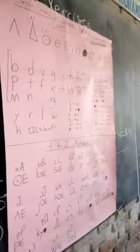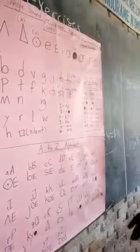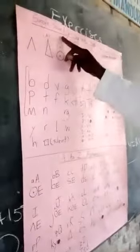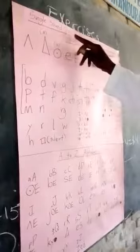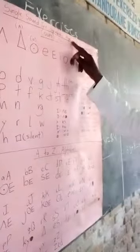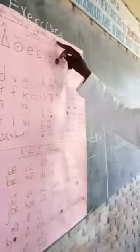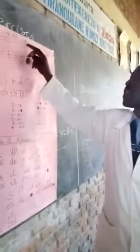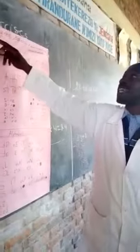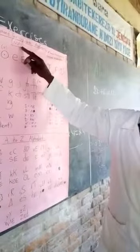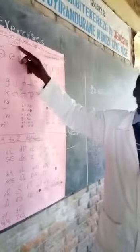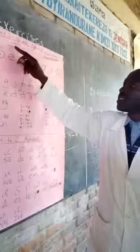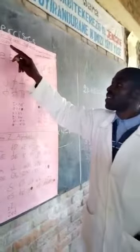We are going to study Single Sound Pass Symbol alphabet. S, P, S — Single Sound Pass Symbol alphabet.